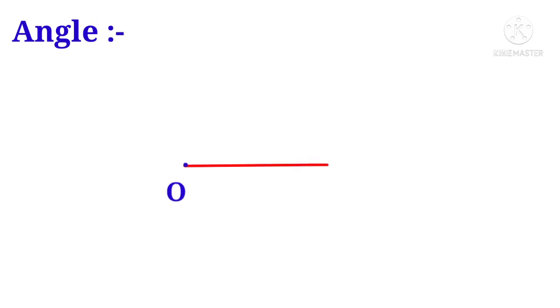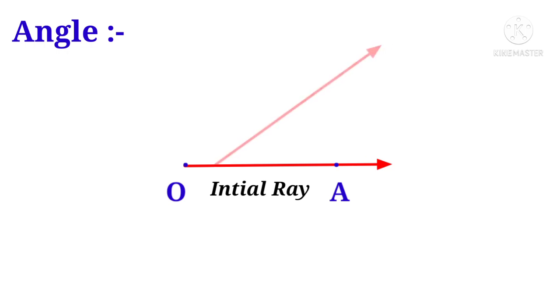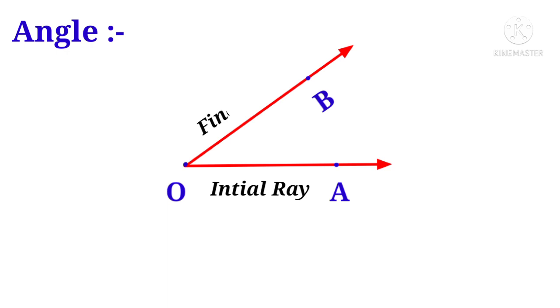Now let us learn what is an angle. It is a combination of two rays. Take an initial point O and draw a ray through it. So OA is an initial ray. Take another ray. Then the distance from the initial ray to the final ray in the anti-clockwise direction is called an angle. It is denoted by angle AOB or angle BOA.